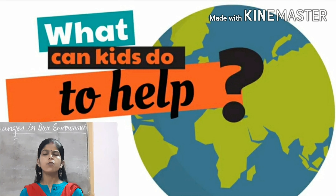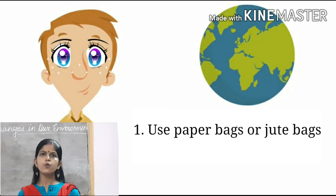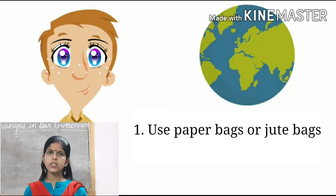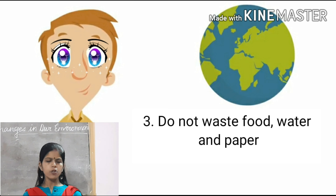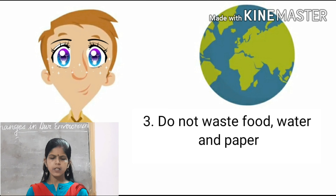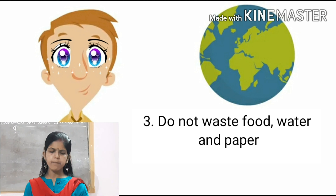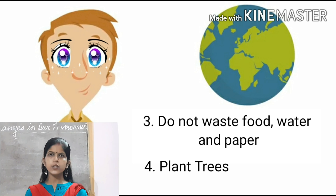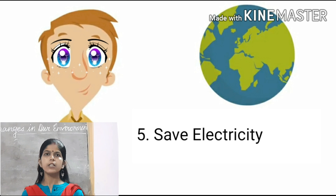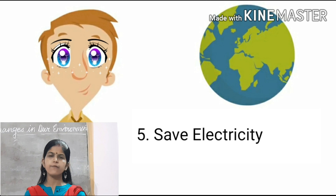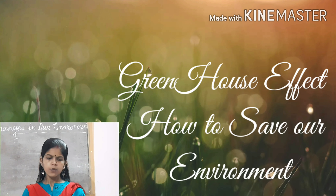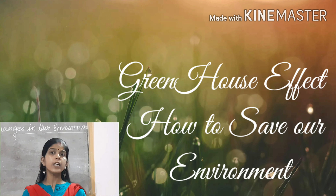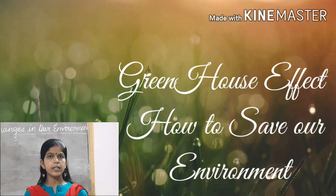As children, now how can you help the environment? Use paper bags or jute bags to carry things. Avoid using polythene bags. Use a bicycle for short distances. Do not waste food, water, and paper. Plant trees in your school, at home, and in your neighborhood. Use electricity carefully — switch off fans and lights when not needed. Use composting manure instead of chemicals.